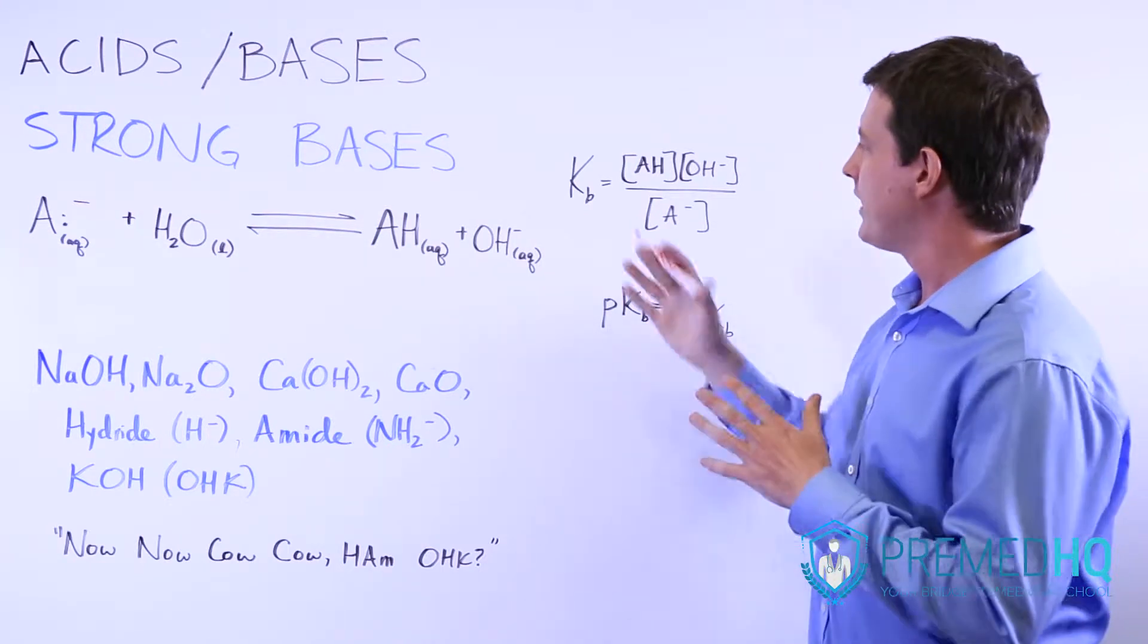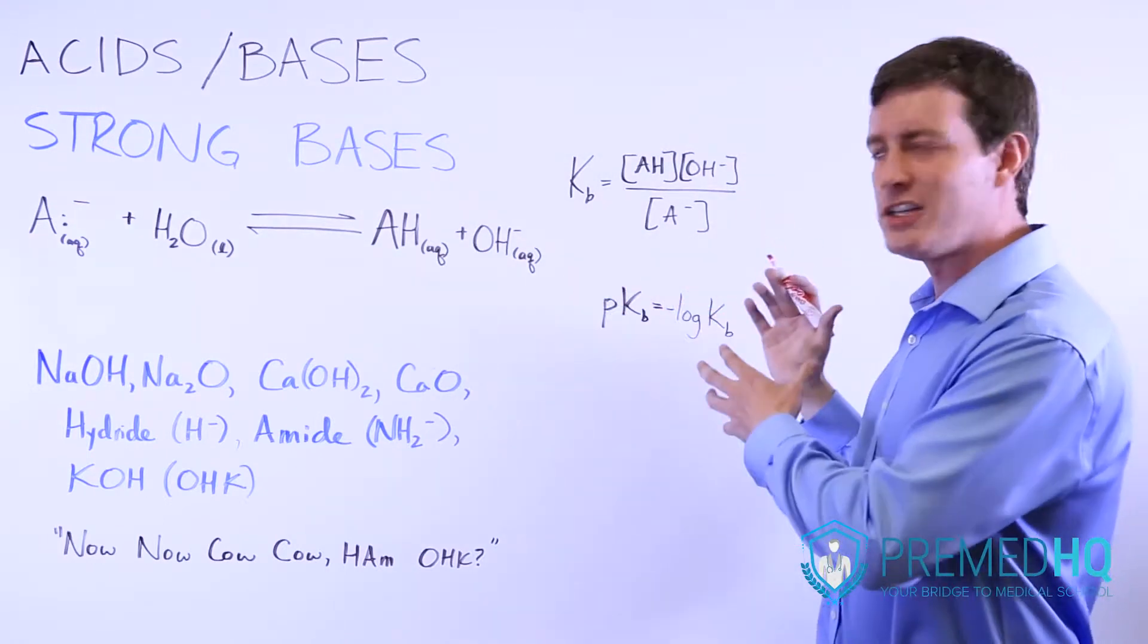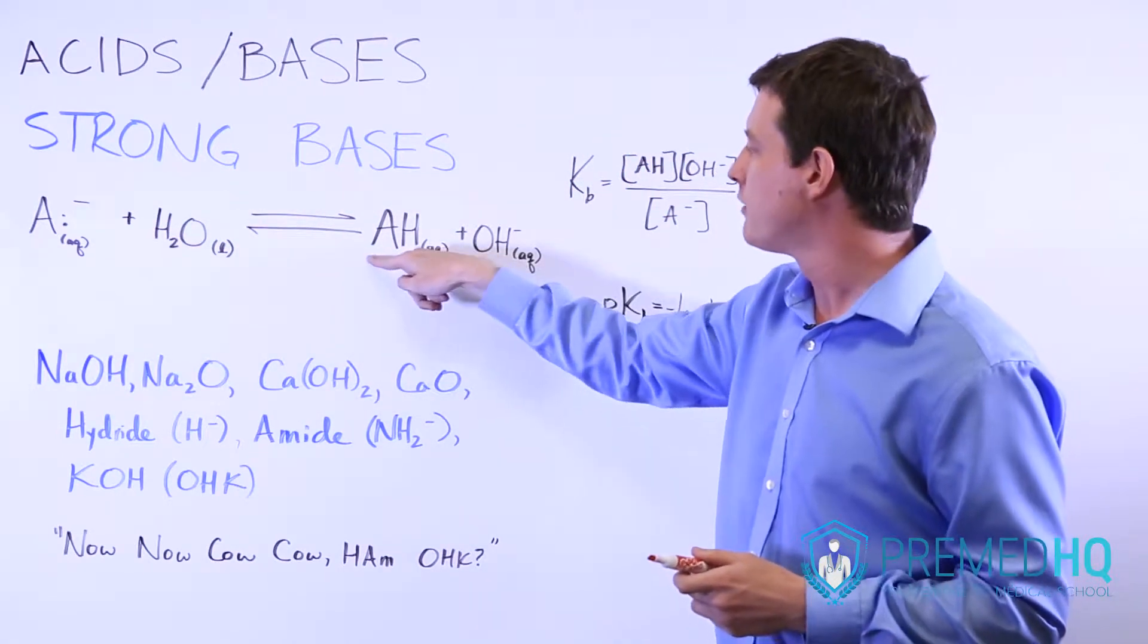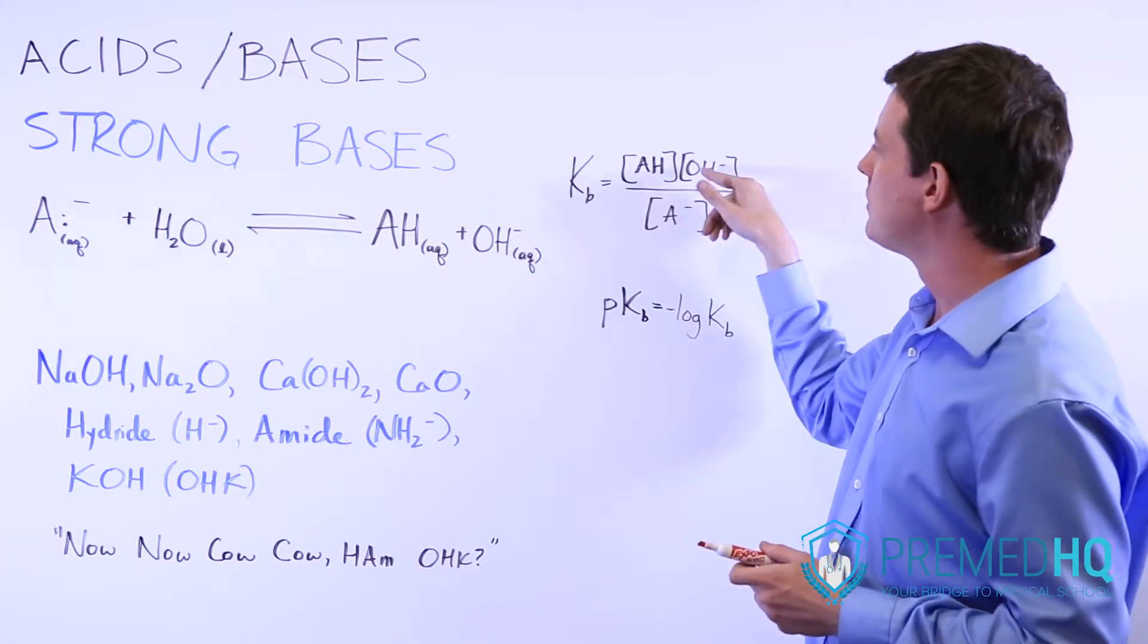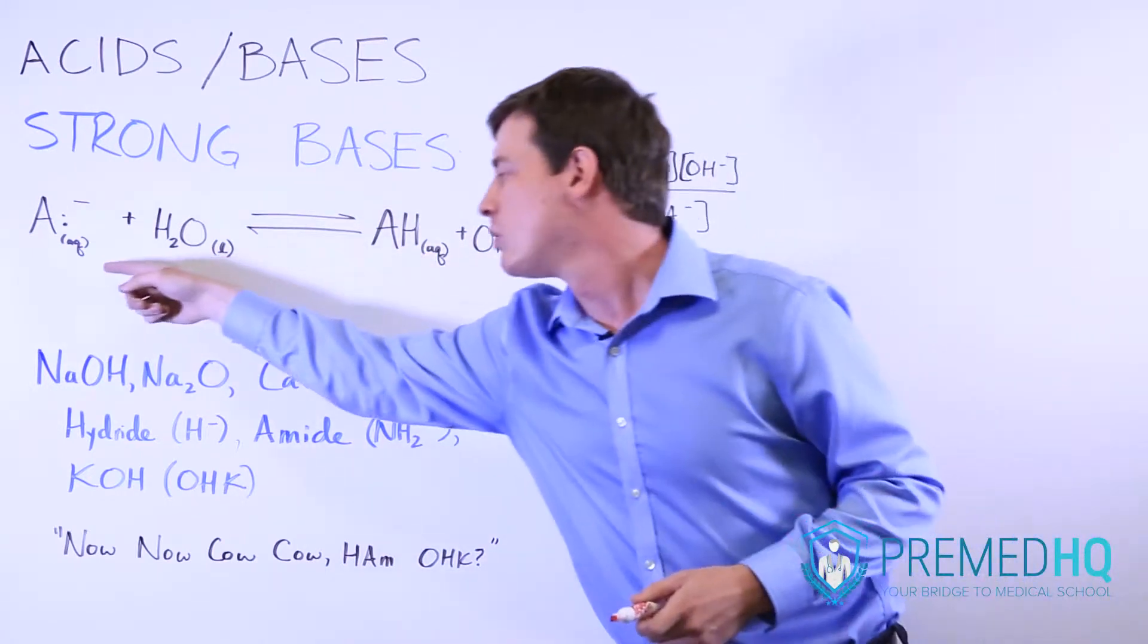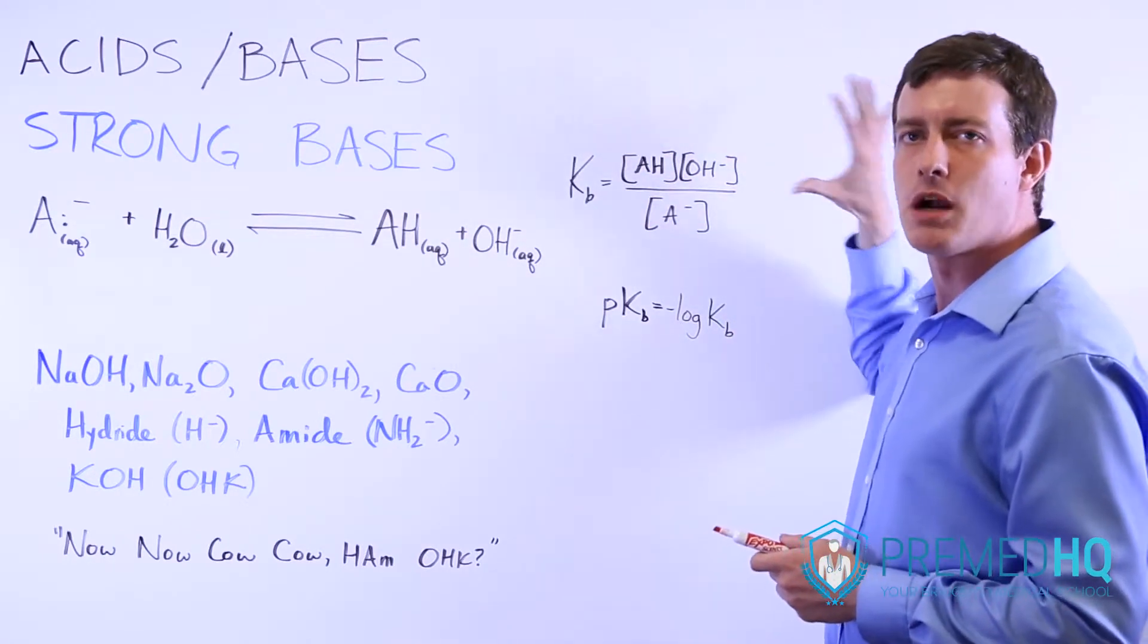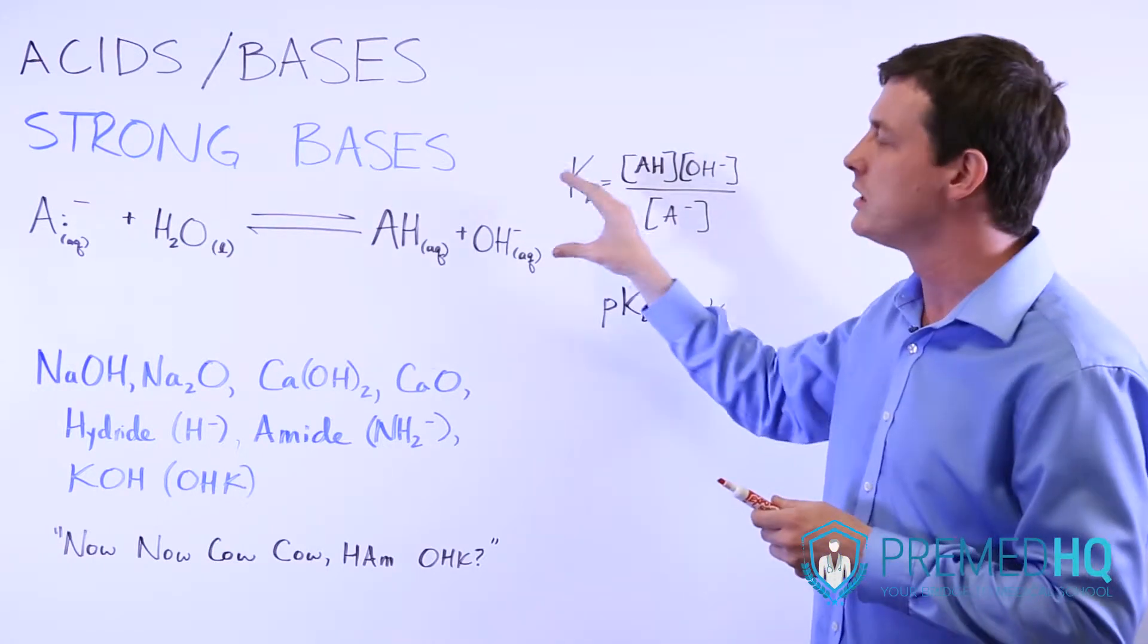The general rule is with any K value, if you have a high K value, that means it's good at doing what it does. And so this base will be a good base if it ends up picking up a lot of protons and yielding a lot of hydroxide ions, and that will mean that the equilibrium concentrations of these two species will be very high, whereas equilibrium of that will be very low, and that makes the KB rather high. So a greater KB represents a stronger base, which is something we've also discussed in the special equilibria video.